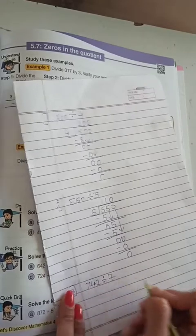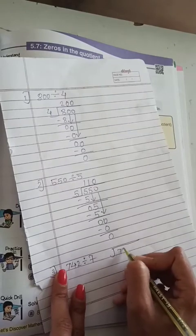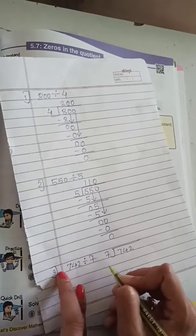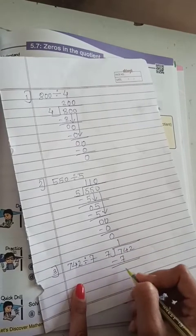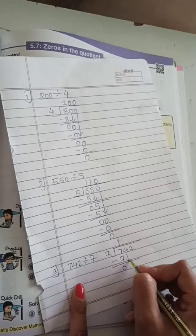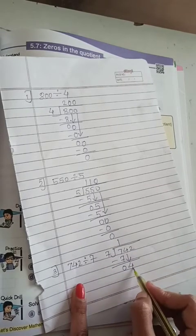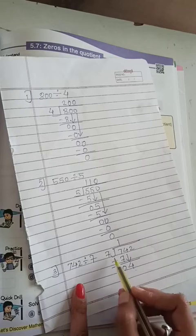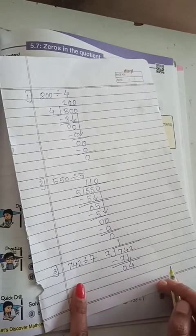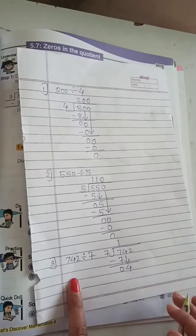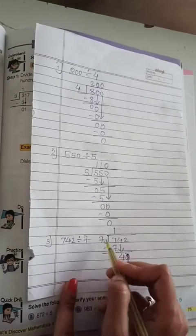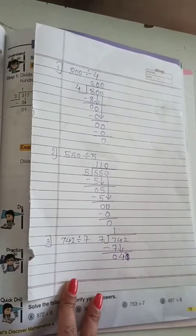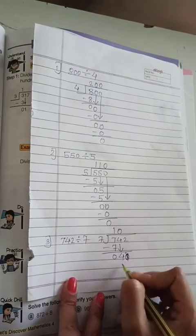Next, see the third one: 742 divided by 7. Divide کرو. 7 minus 7, 0. ابھی یہ 4 کو نیچے لاؤں. ابھی ہم 4 کو 7 میں سے — 7 کے table میں 4 جاتا ہے کیا? No. What we are going to do next? 7 کے table میں 4 نہیں جاتا ہے. So we are going to again minus 0. 7, 0's are 0.